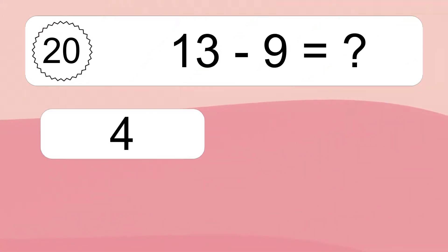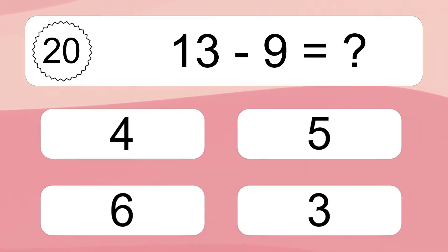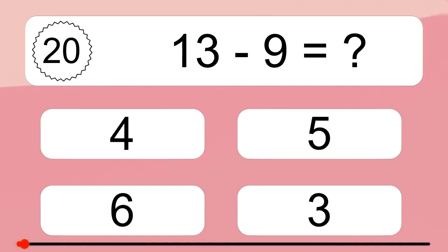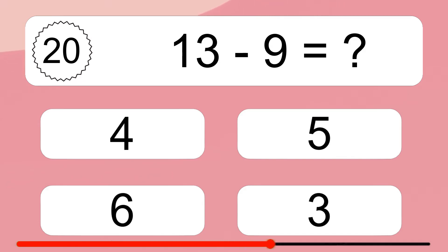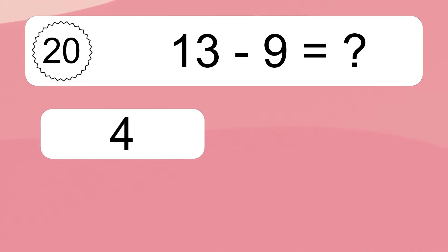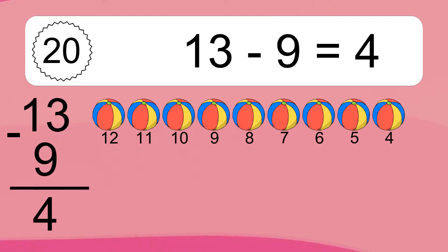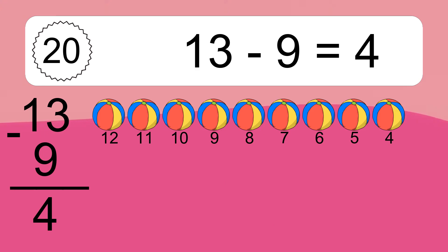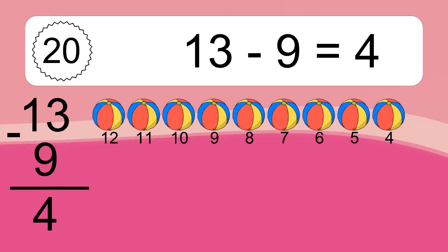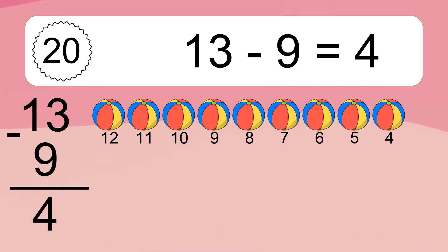13 minus 9 equals what? 13 minus 9 equals 4. Let's count it: 12, 11, 10, 9, 8, 7, 6, 5, 4.